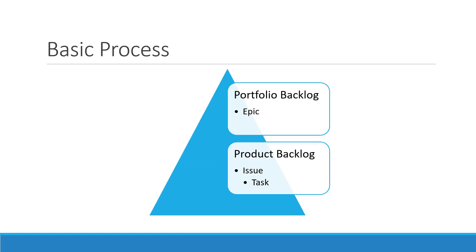The Basic process template has only a few work item types associated with a project. Whenever you create a project in Azure DevOps using the Basic process template, you will only find limited work item types: you can create an Epic, an Issue, and a Task. There are only limited work item types available in the Basic process.